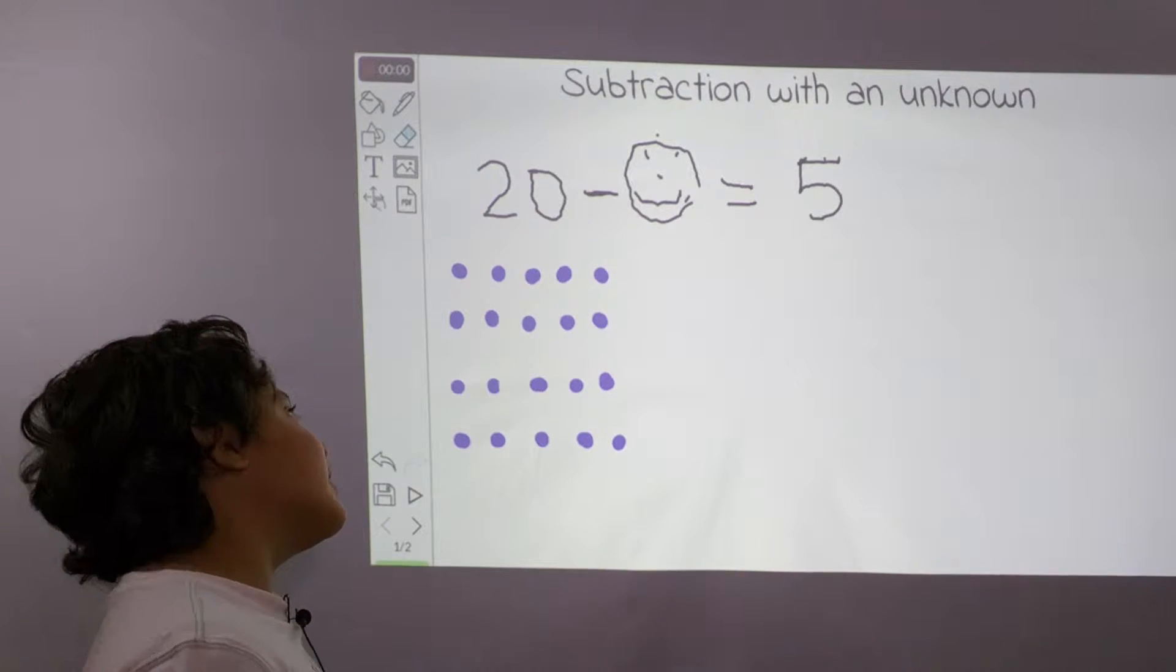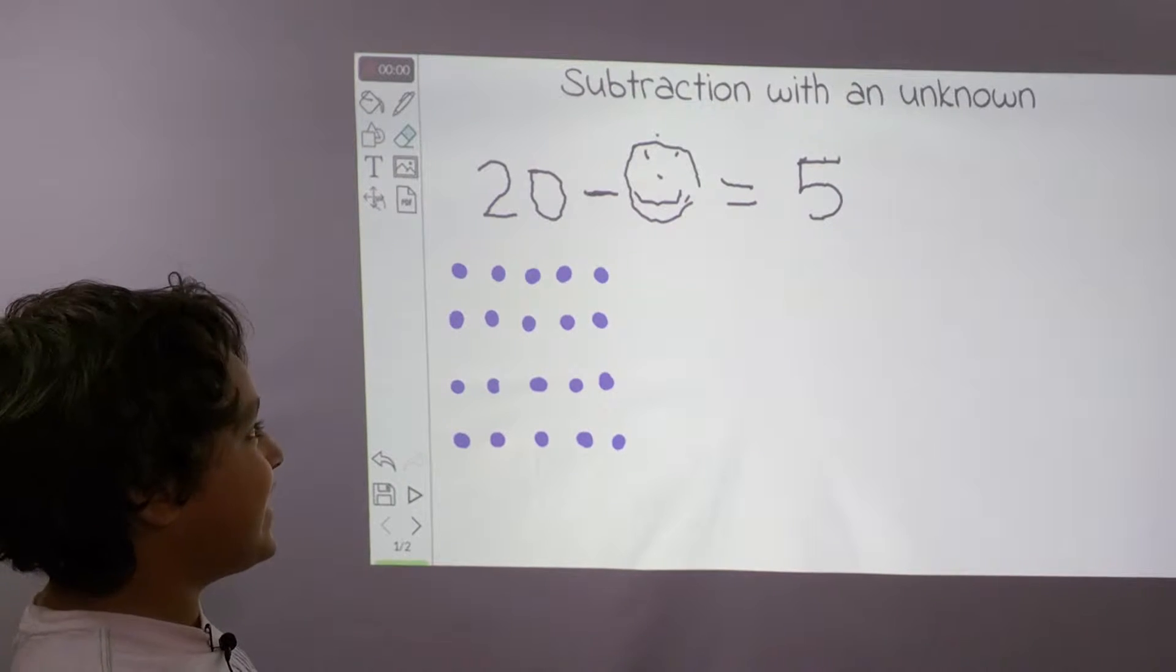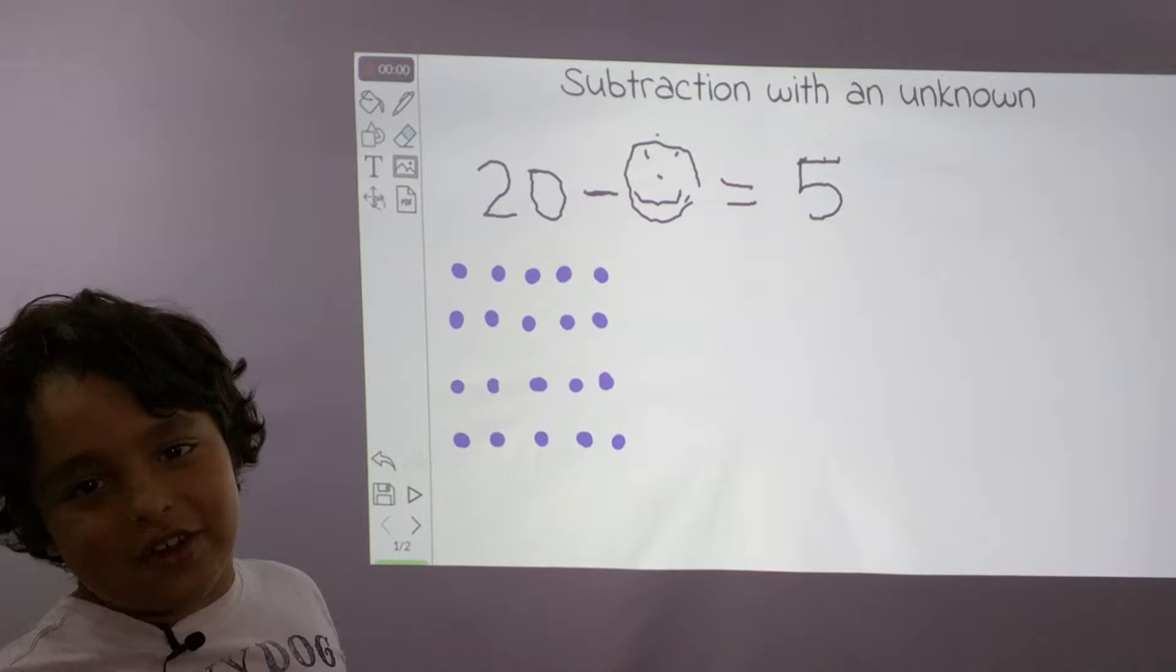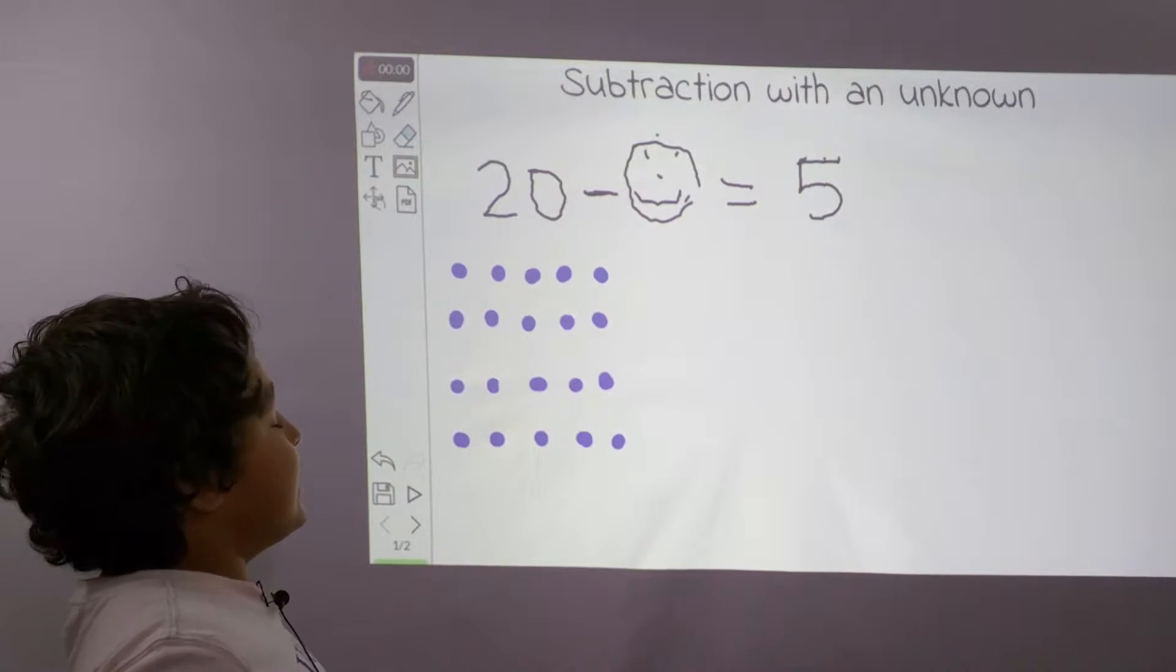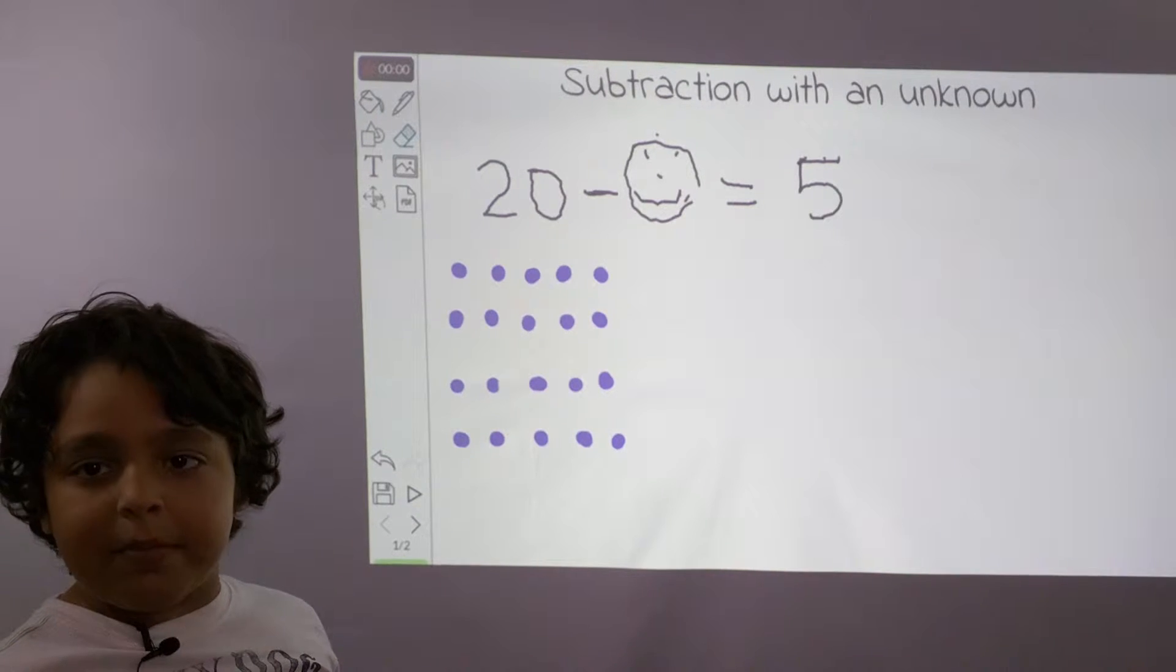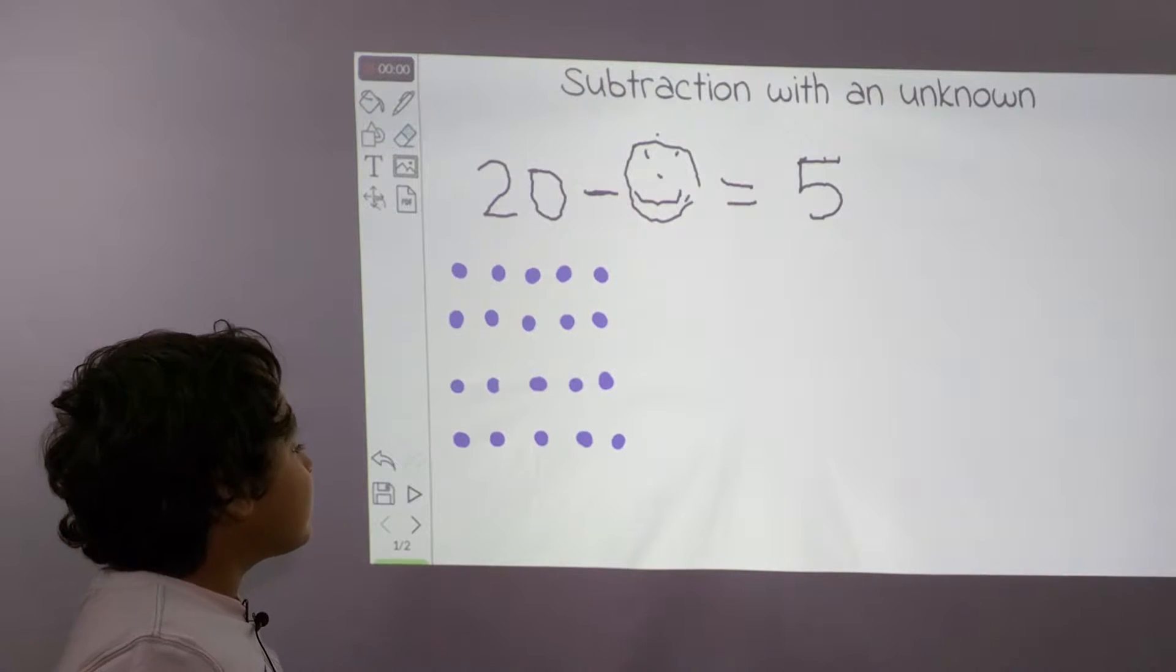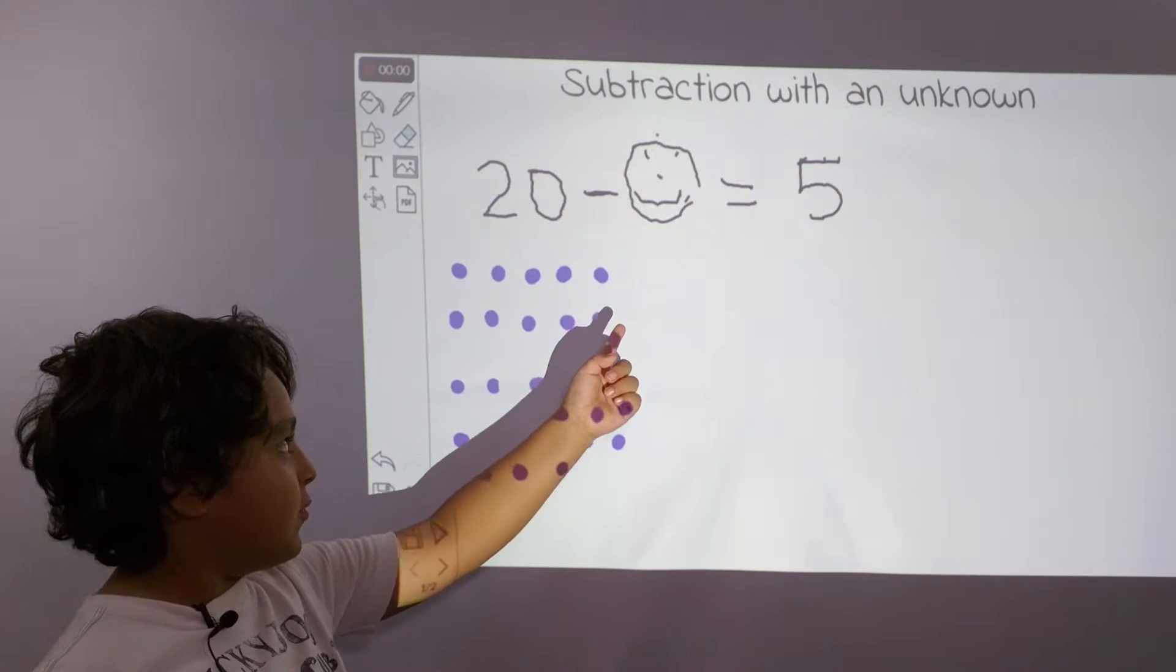Okay, so our first problem is 20 minus happy face equals 5. So a happy face means an unknown number. Like, you can put anything there except for a number. If you put a number, then that might be the wrong answer.